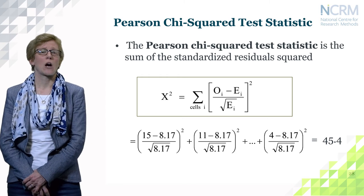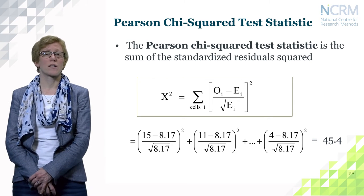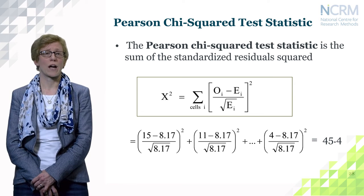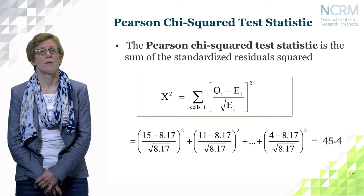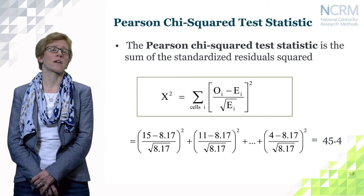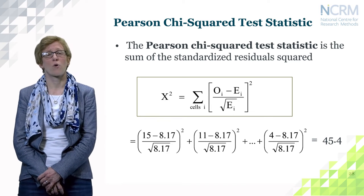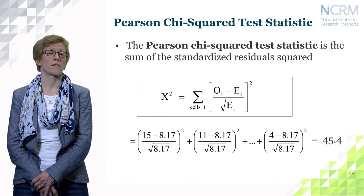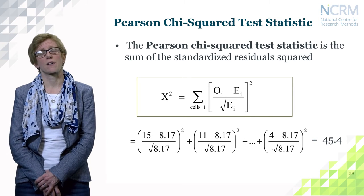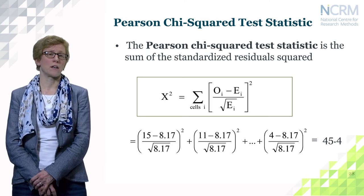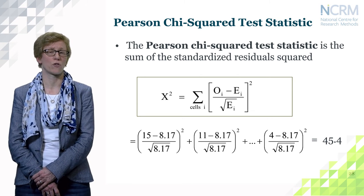The Pearson chi-square test allows us to compare observed and expected frequencies. You may have come across this test when testing associations between two categorical variables — it is the same principle here. We look at the sum of the standardized residuals in squared terms. We can calculate this statistic for our example: with 18 cells in total, the chi-square test statistic for the recall of stressful events example is 45.4, which we now compare to the chi-square distribution.